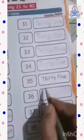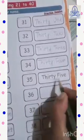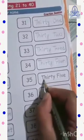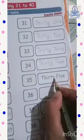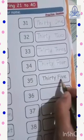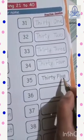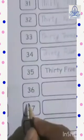Next one — 35. T-H-I-R-T-Y F-I-V-E, 5 — 35. Thirty-six: T-H-I-R-T-Y — 36.